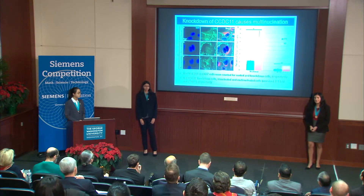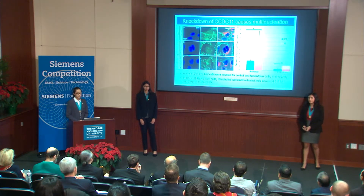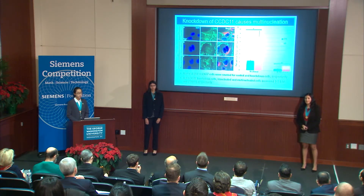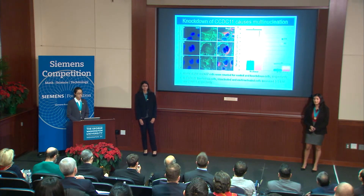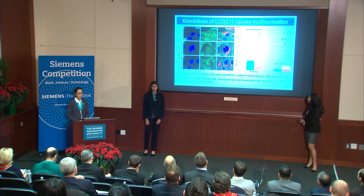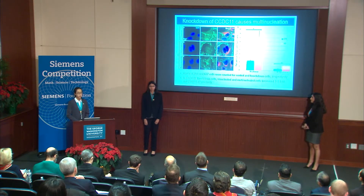It is known that cytokinetic defects often lead to bi- and multinucleated cells. Consistent with this, after 48 hours of CCDC11 siRNA transfection, we observed increased instances of bi- and multinucleated cells. In order to achieve accurate quantification, we used beta-catenin shown in green to outline cell boundaries. Quantification revealed a 3.5-fold increase in binucleated cells and a 2.9-fold increase in multinucleated cells, indicating for the first time that CCDC11 may be responsible for the efficient completion of cytokinesis.